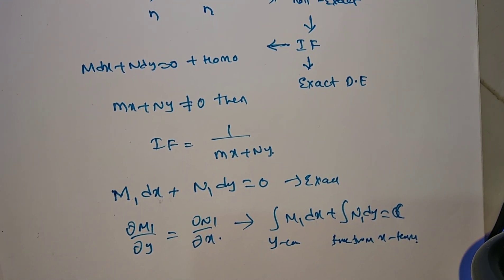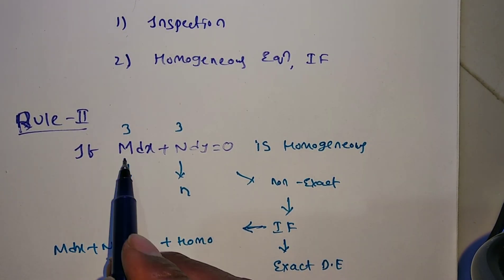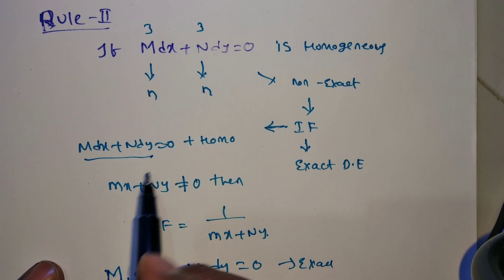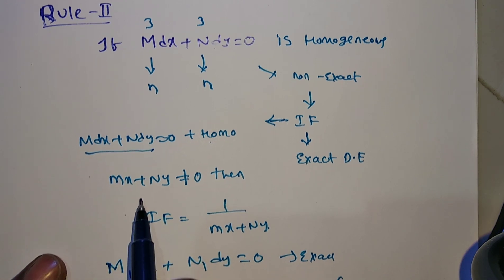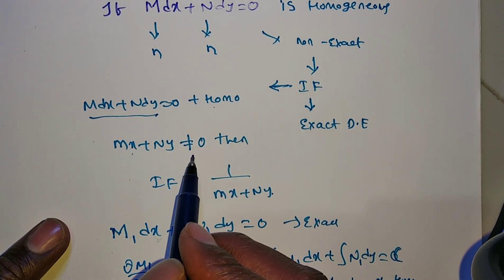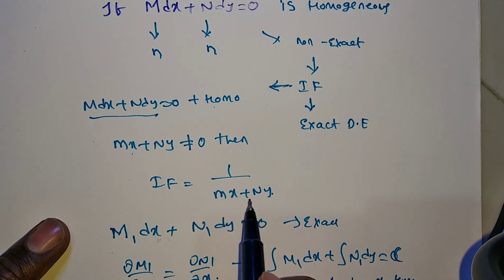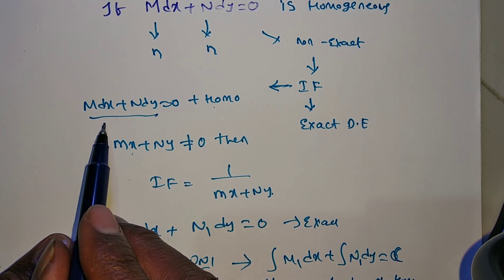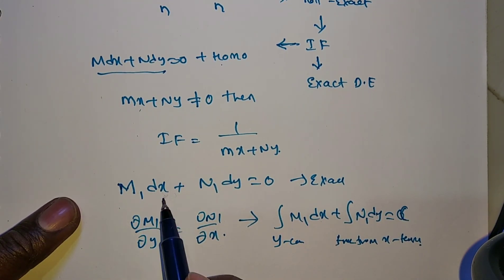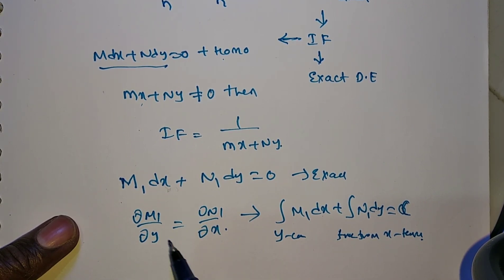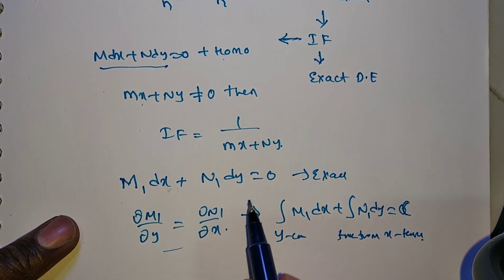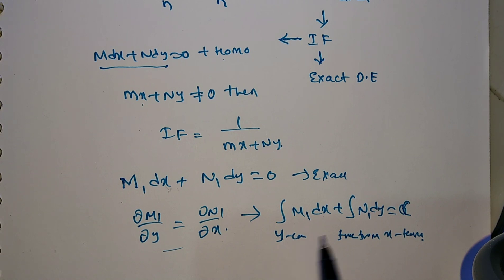To recap: if the given differential equation M dx + N dy = 0 is homogeneous with M and N of the same order, and if Mx + Ny ≠ 0, then the integrating factor is 1/(Mx + Ny). Multiply to get M1 dx + N1 dy = 0. Verify ∂M1/∂y = ∂N1/∂x, then apply the general solution formula.